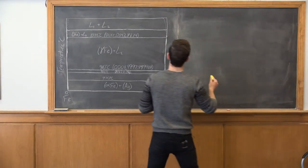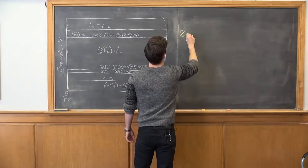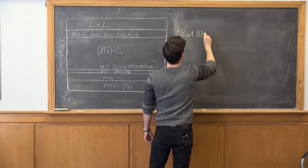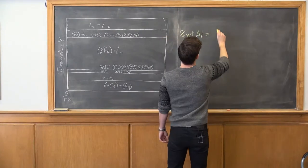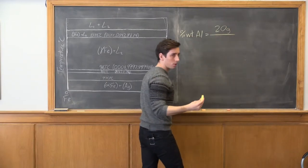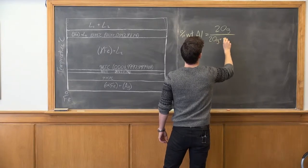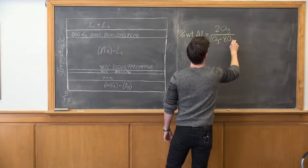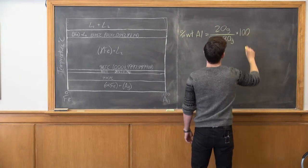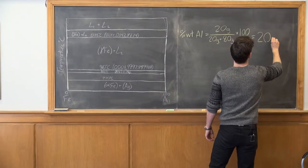So if we wanted to find the percent composition of silver, we were given 20 grams of silver over the total, which was the 20 grams of silver plus the 80 grams of iron, and multiplied by 100 so we get a percent and this is going to equal 20 percent.